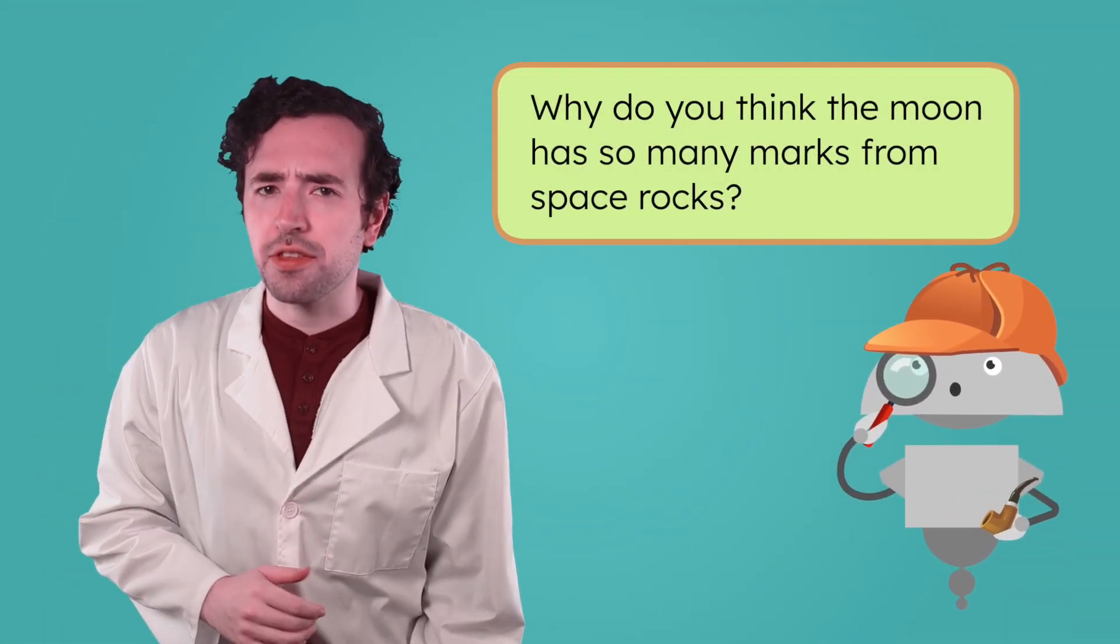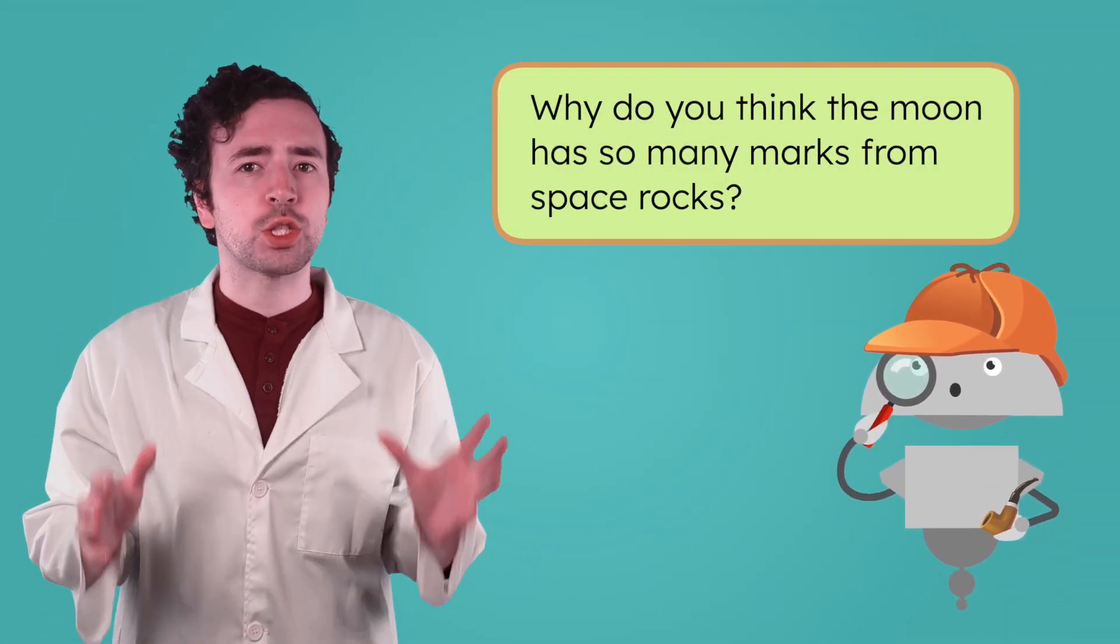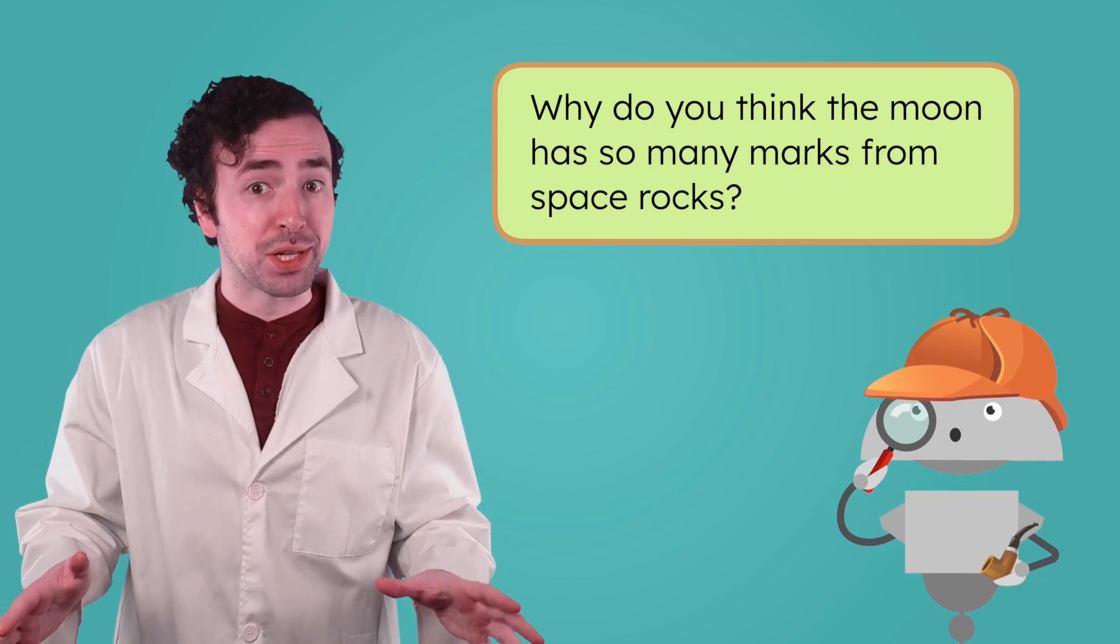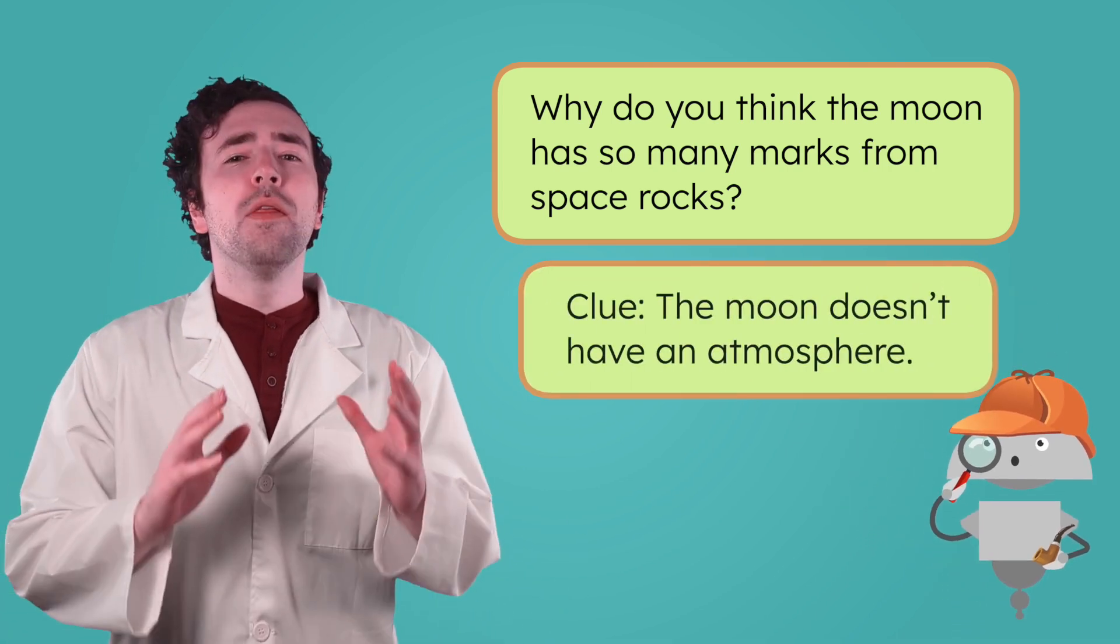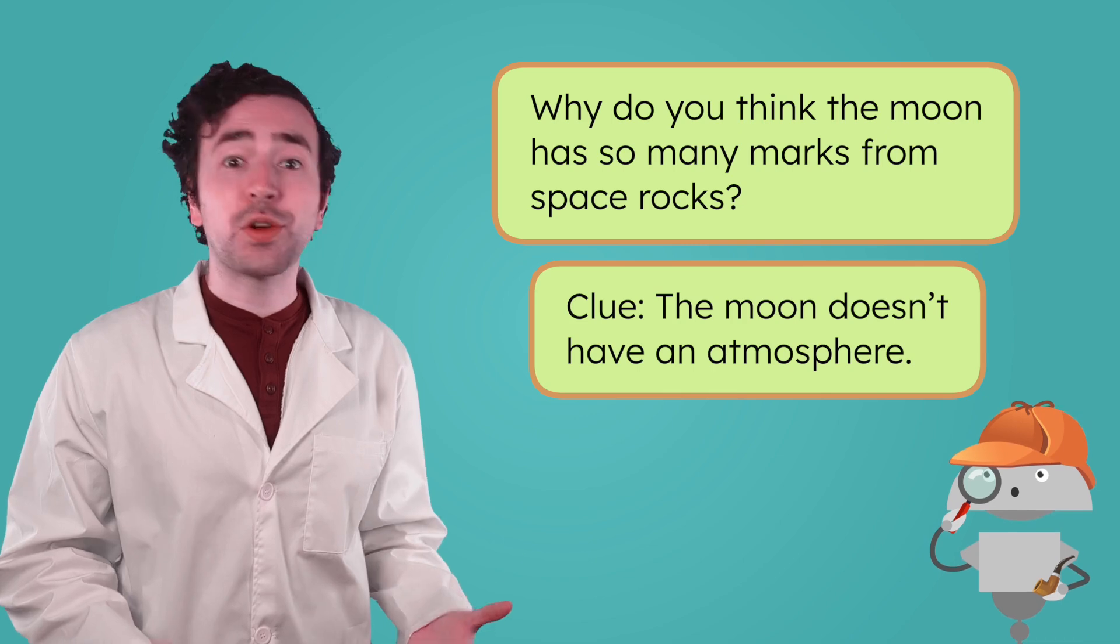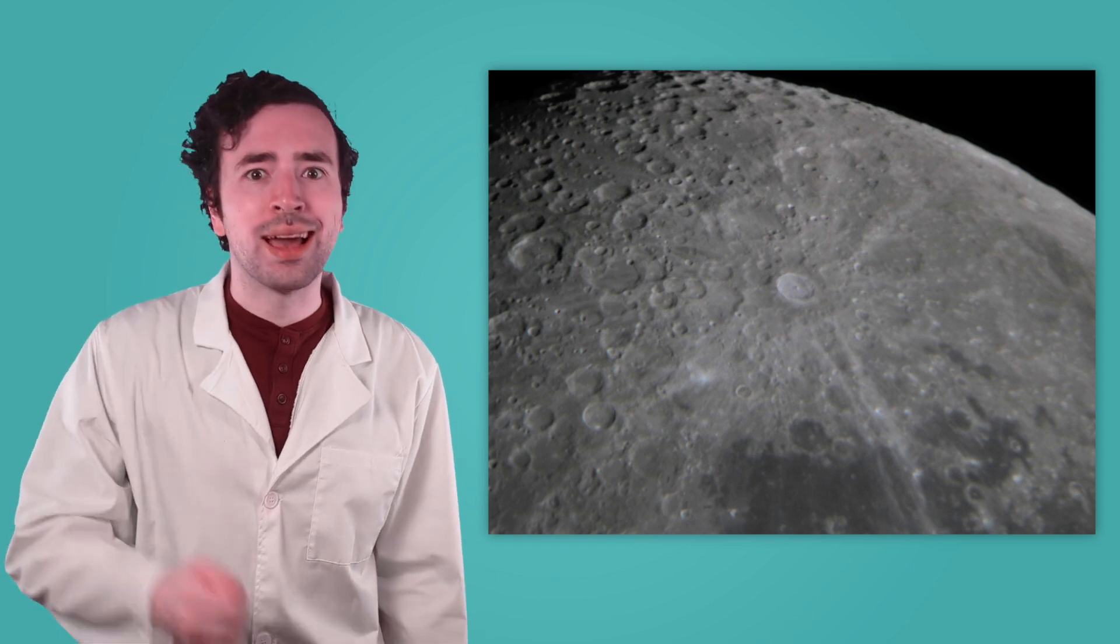Why do you think the moon has so many marks from space rocks? Way more than we see on Earth. Here's a clue. The moon doesn't have much of an atmosphere to protect it. Earth's atmosphere helps burn up space rocks before they ever reach the ground. But on the moon, there's no thick blanket of air to stop them. That's why space rocks hit the moon's surface again and again, and why those impacts play a big role in shaping what we see.